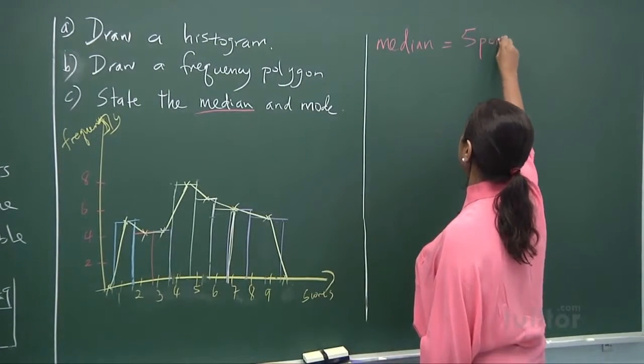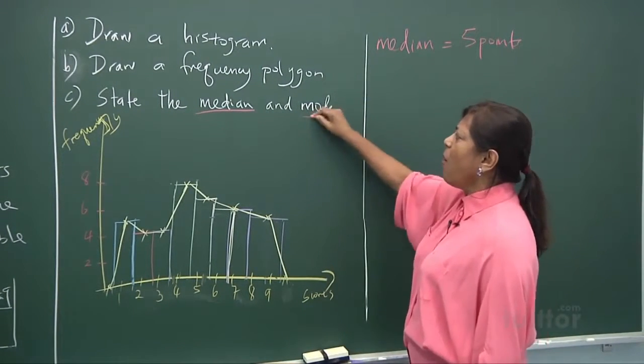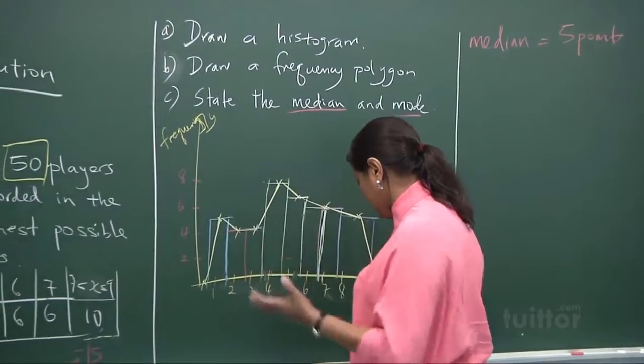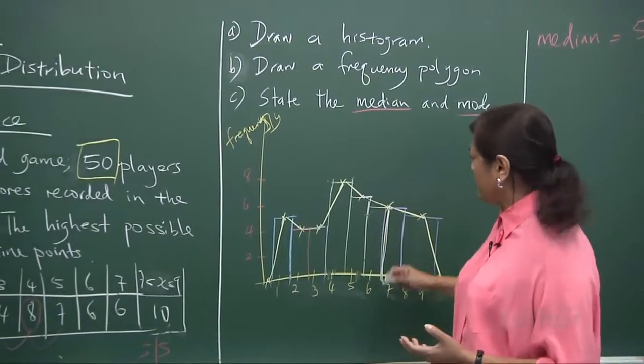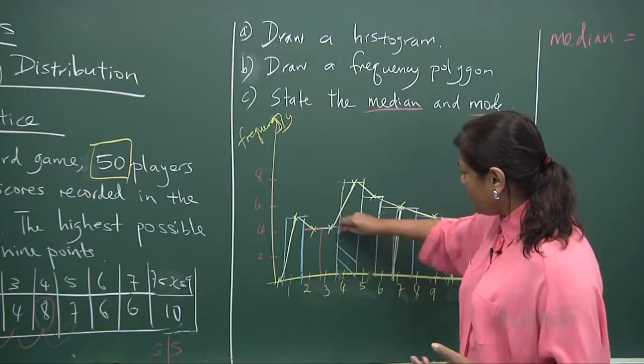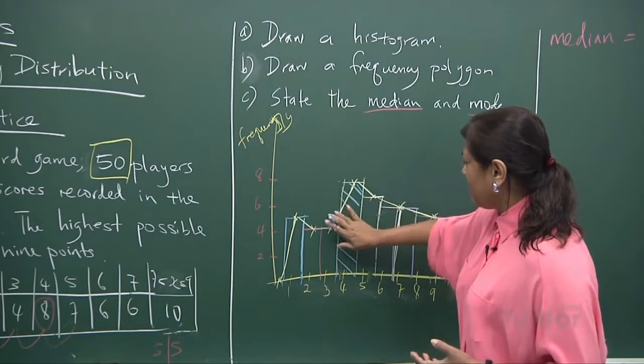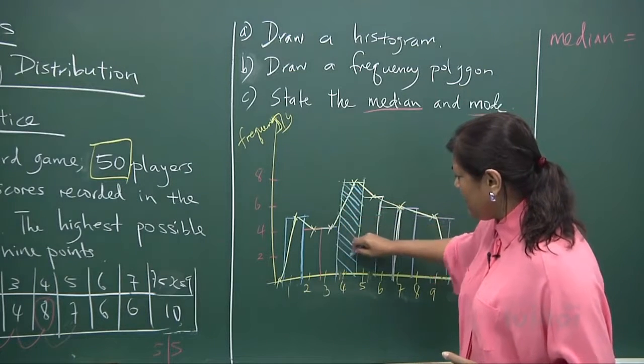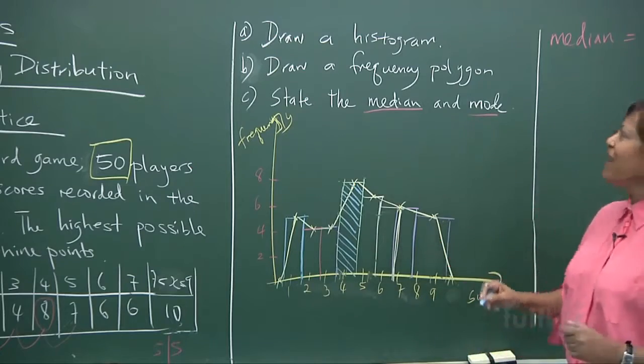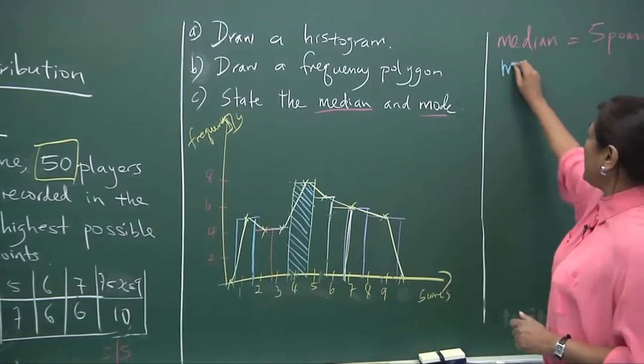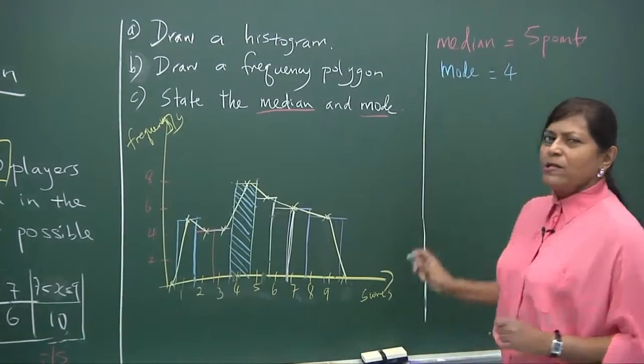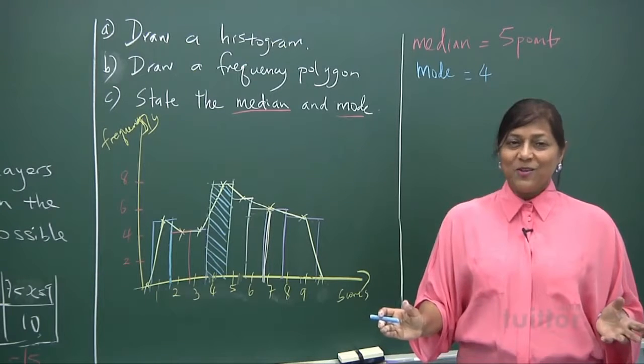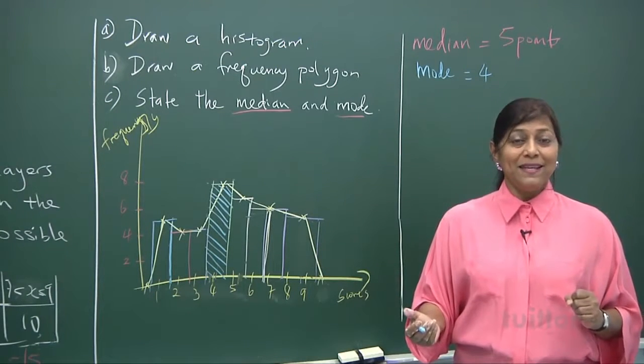And how about the mode? The mode is the most common one. You look at the tallest building. Like I said, take it as building structures. And the tallest is this four-pointer. So this four-pointer, this is where the mode is. Most common. So the mode will be, the mode is four. So generally, most of them are scoring four points. You got it? In this board game. Though the median is five.